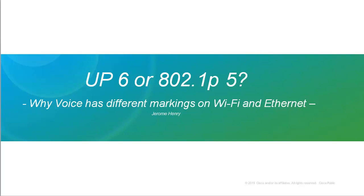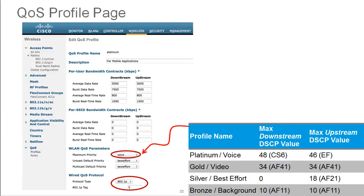Hello and welcome to this video on Wi-Fi. This video is a bit different from the others because usually in this series we show you some configuration, whereas here this is just a small video to answer a question I often get from people working on Wi-Fi: why is it that voice is marked as 6 on the Wi-Fi side while we say it should be marked as 5 on the Ethernet side? This is a video on the history of why this is.